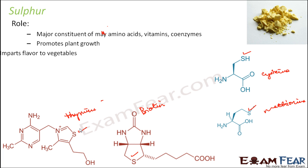Sulphur also promotes plant growth and imparts flavor to vegetables. Sulphur, iron, and zinc are micronutrients — they are needed in small amounts and are called trace elements, meaning they are required in traces. Even if they are not present, plants can survive without them, though their presence is beneficial.